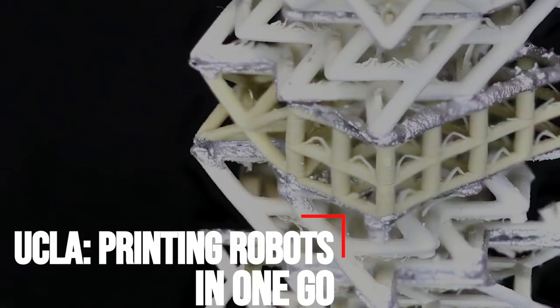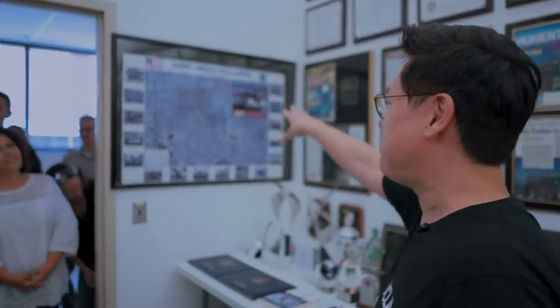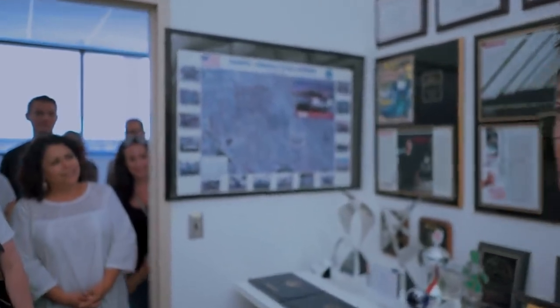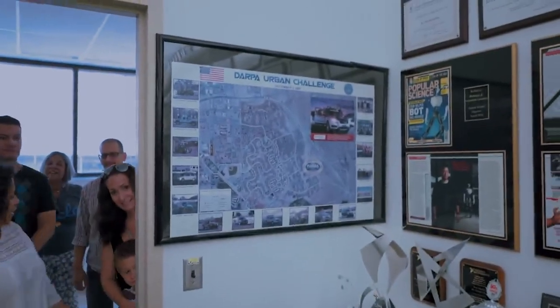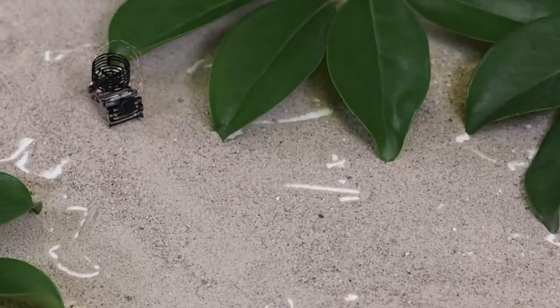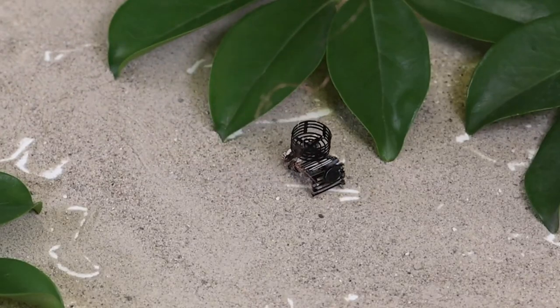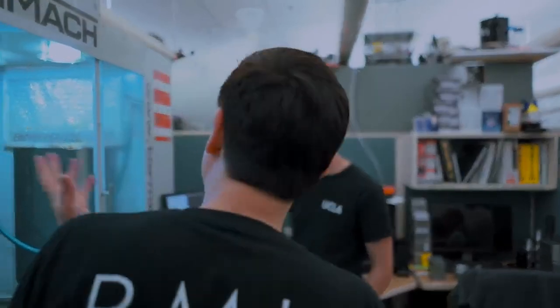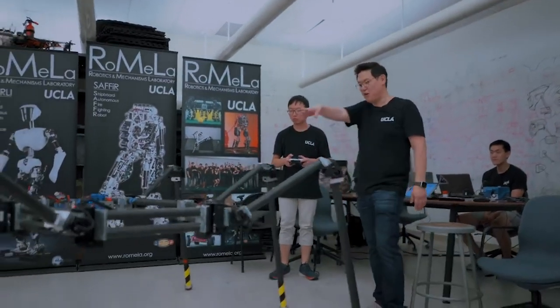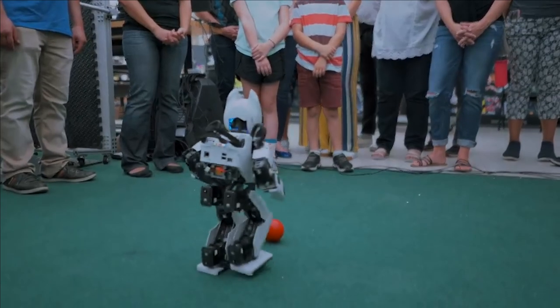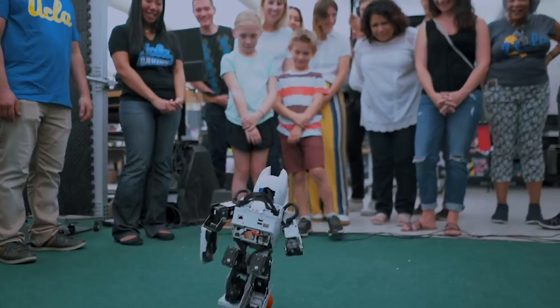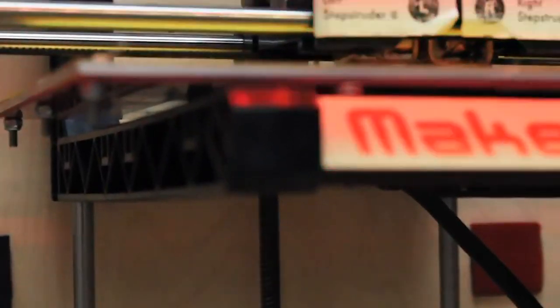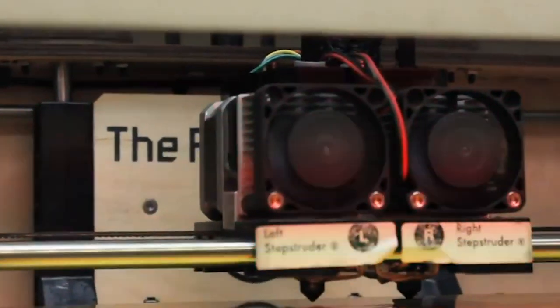UCLA – Printing Robots in One Go. On several occasions, additive manufacturing has been used to build robots, in part because of the design freedom it offers. However, in most cases, robots are printed in several parts before being assembled once all the parts have been designed. But this assembly stage may soon be coming to an end. Recently, a team of researchers at the University of California, UCLA, developed a new single-step all-in-one 3D printing method that allows robots to be printed in one go.